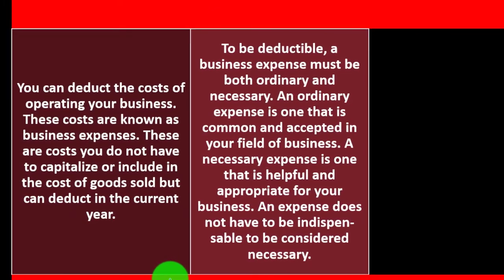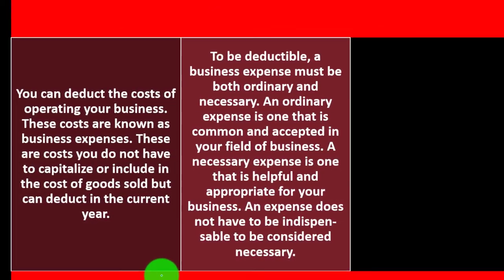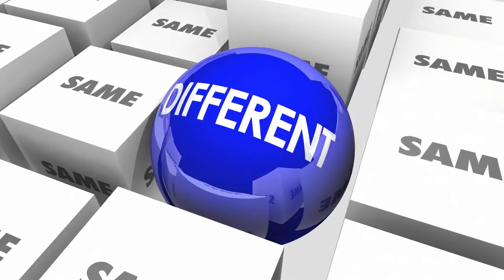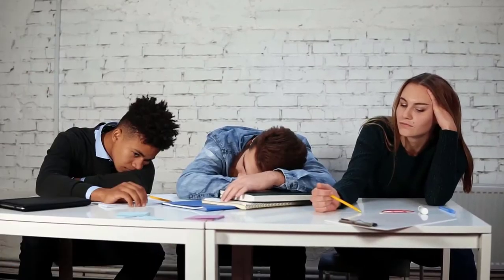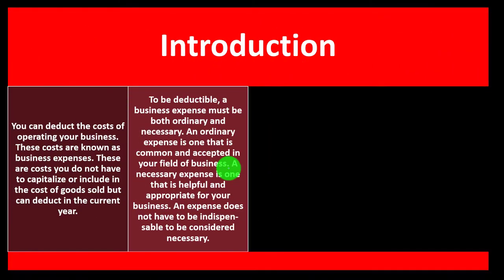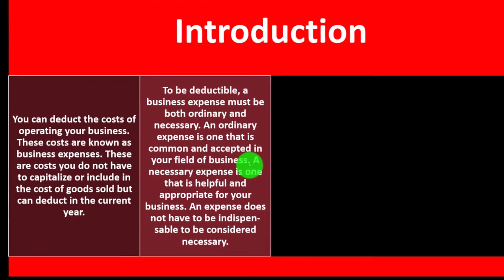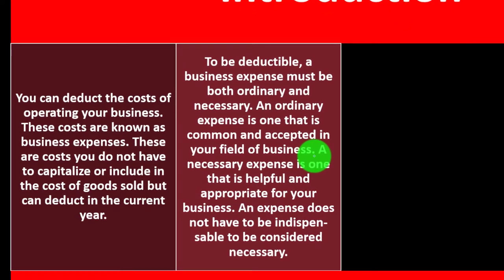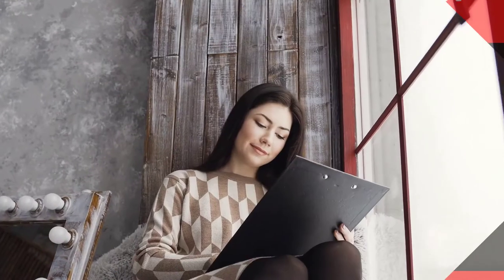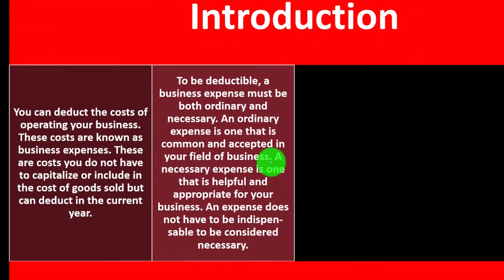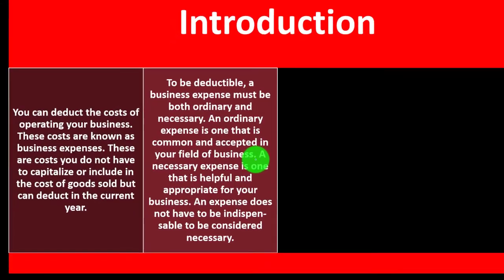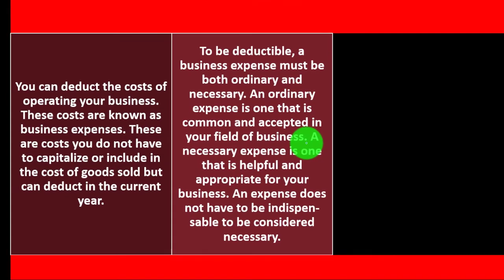So to be deductible, a business expense must be both ordinary and necessary. Those are the key terms: ordinary and necessary. An ordinary expense is one that is common and accepted in your field of business. This gets a little bit tricky in different fields of business. If you're in a more straightforward field like accounting, the IRS probably doesn't see accounting as something you might do as a hobby, although I think it's a great way to pass the time.